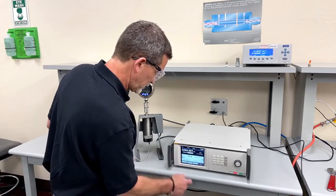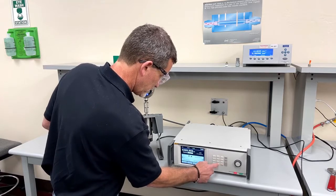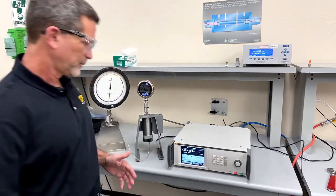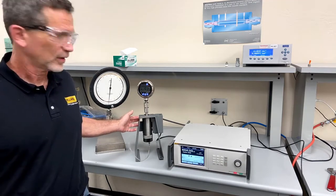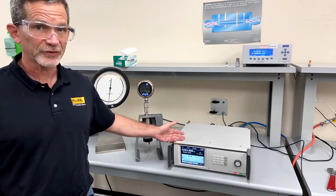To go down to 30 PSI, we simply type in 30, hit enter, and we're going to go. And you can listen again as the CPS exhausts the pressure, not the controller exhausting the pressure.